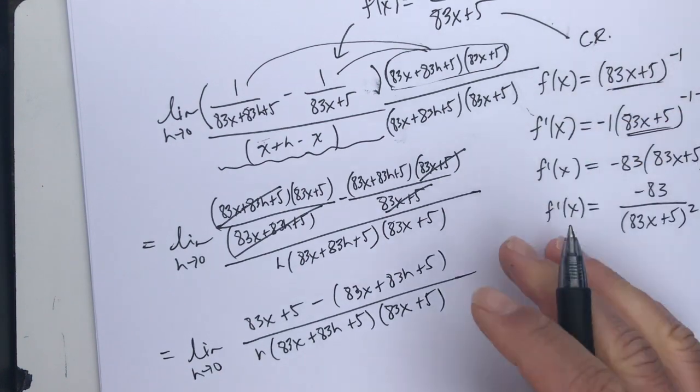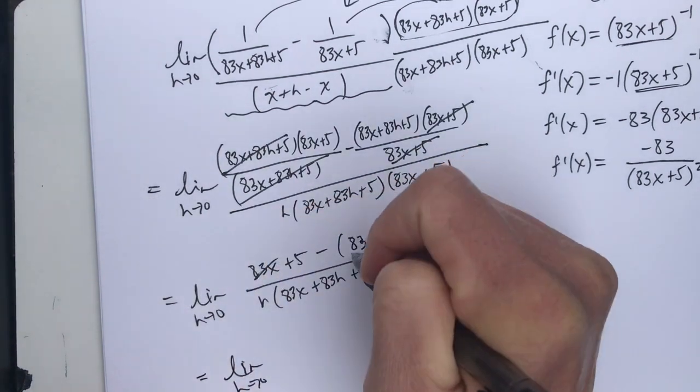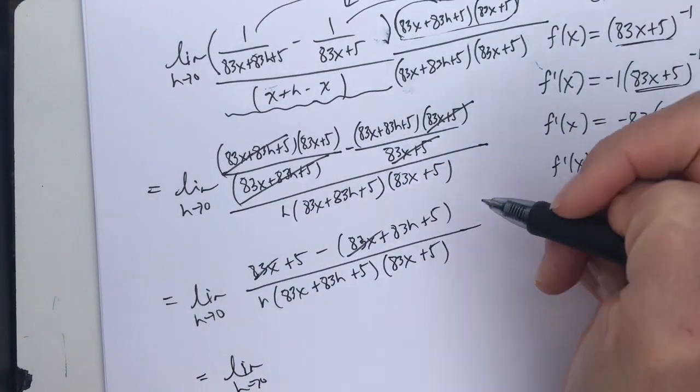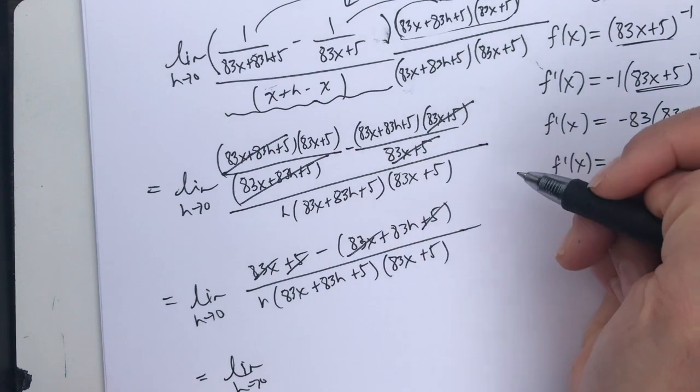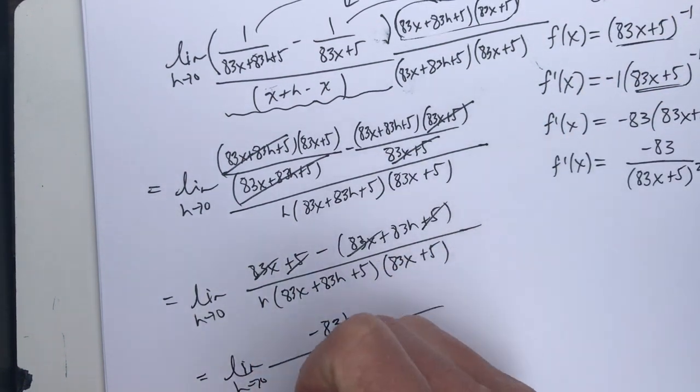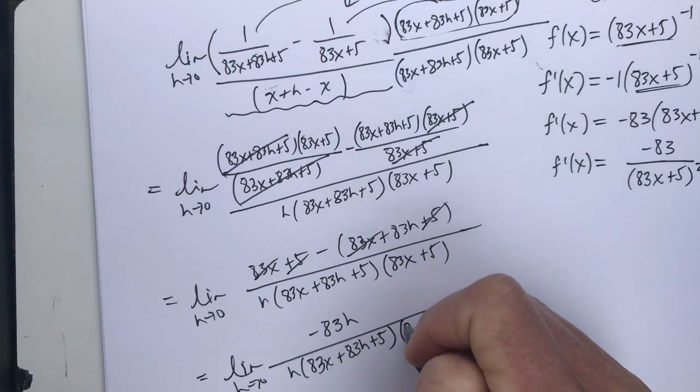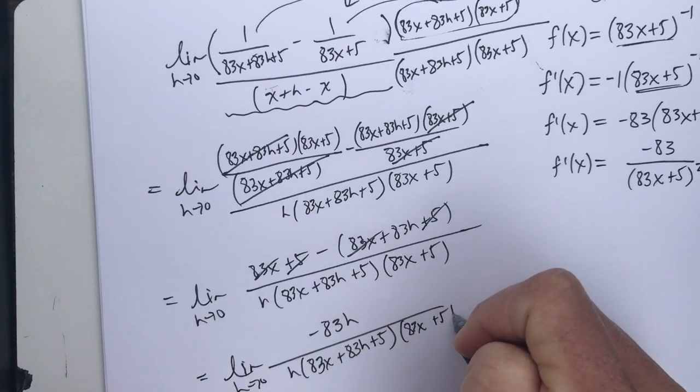And now there's that game where stuff is just going to start to cancel. 83x minus 83x, they're gone. The plus 5 minus the plus 5. So now I'm left with negative 83h all over h times 83x plus 83h plus 5 times 83x plus 5.